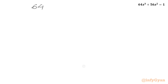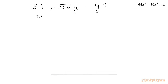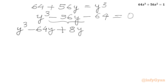We rewrite this as y³ - 56y - 64 = 0. The equation is cubic, so I can use the factorization method. We split the middle term −56y by writing −64y + 8y, so: y³ − 64y + 8y − 64 = 0.